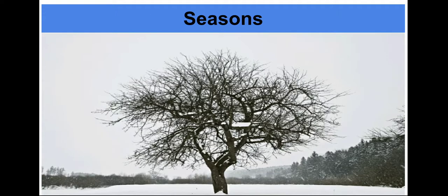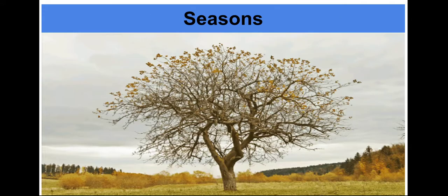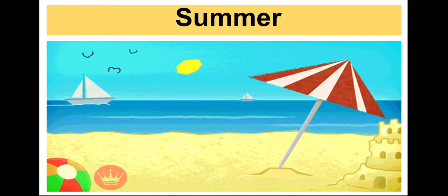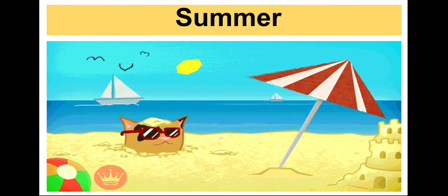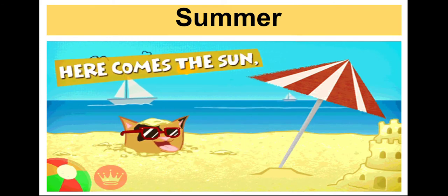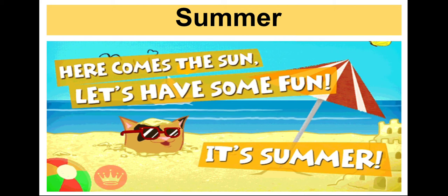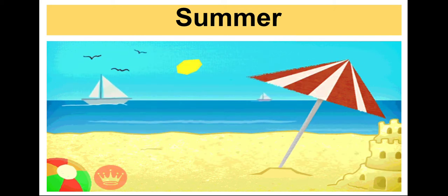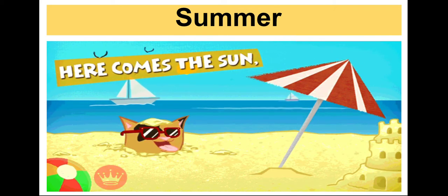The four main seasons are summer, winter, monsoon, and autumn. First, let's see about summer. Summer is the hottest time — it occurs in the May months. We get holidays because of the hot sun.